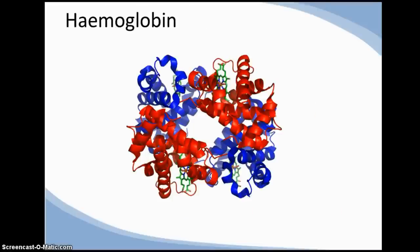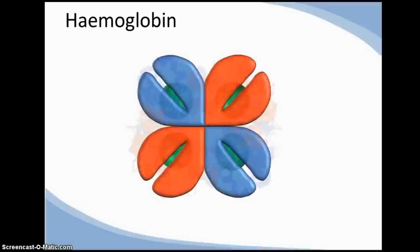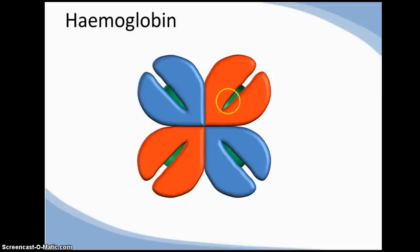Here's haemoglobin again in its structural form. But this is too complicated for what we're doing today, so we're going to simplify it to this functional diagram. We can still see the two alpha chains, the beta chains, and the encapsulated heme groups.